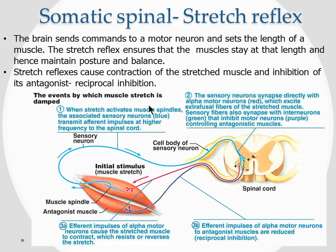The stretch reflex exists because the brain sends commands to a motor neuron setting the length a muscle should contract to. If that muscle is stretched beyond that set length, the reflex fires to bring it back. The purpose is to ensure muscles stay at the length set by the brain. If your quadriceps need to contract only so much, they remain at that length. This helps maintain posture and balance — for example, if you tilt while standing on one leg, the righting reflex brings you back upright.